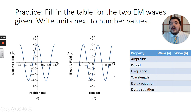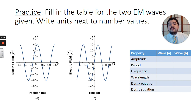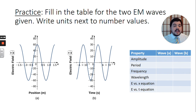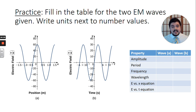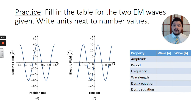Here's the practice. We'll talk about the answers in class together, but I want you to fill in the table for the two electromagnetic waves given. Write units next to every number value. We've got an electric field versus position for wave A, and an electric field versus time for wave B. Tell me the amplitude, period, frequency, and wavelength for each, then write equations versus both position and time for each. Keep in mind that the speed of the wave is C, the speed of light, and speed equals wavelength times frequency. All right, that concludes this video — looking forward to the next one.